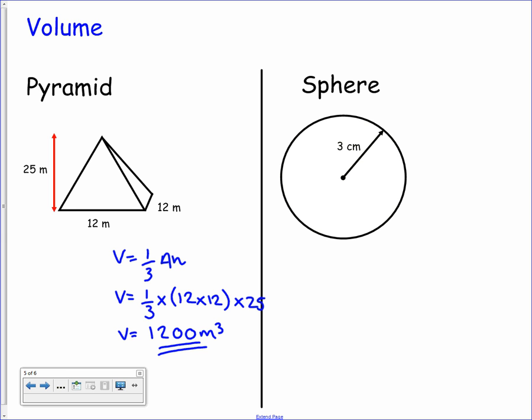And similarly for the sphere. Again you're given this formula on your formula sheet. So v equals four thirds pi r cubed this time. So all we need to identify is the radius. It's clearly given to you as a radius of 3. So we have 4 thirds times pi times r cubed. And again following through this calculation.